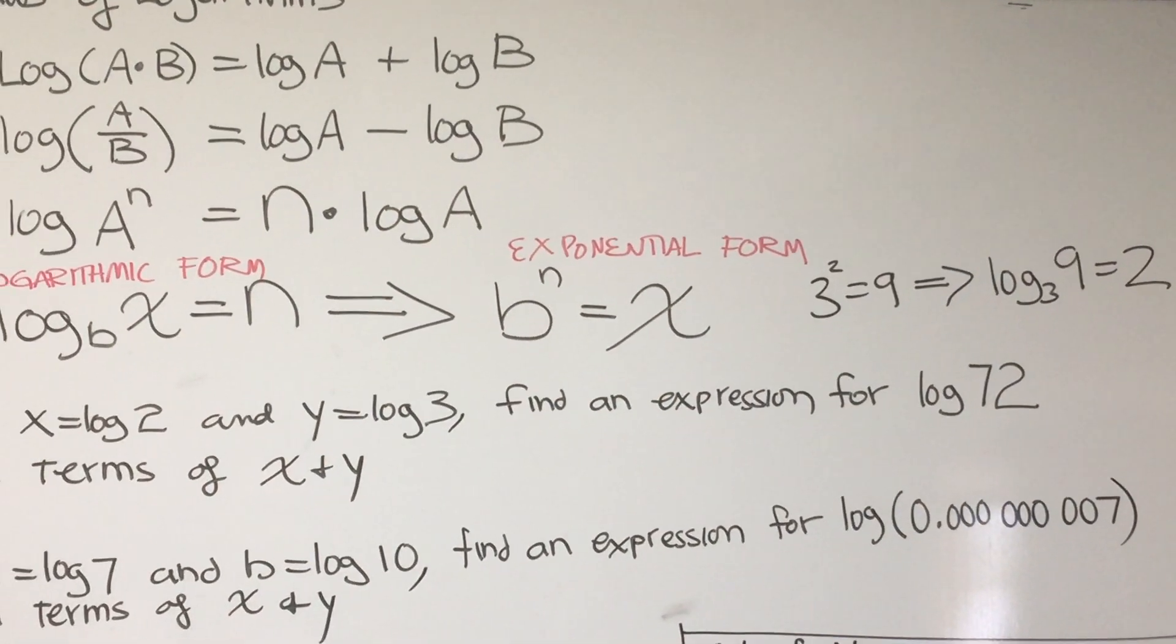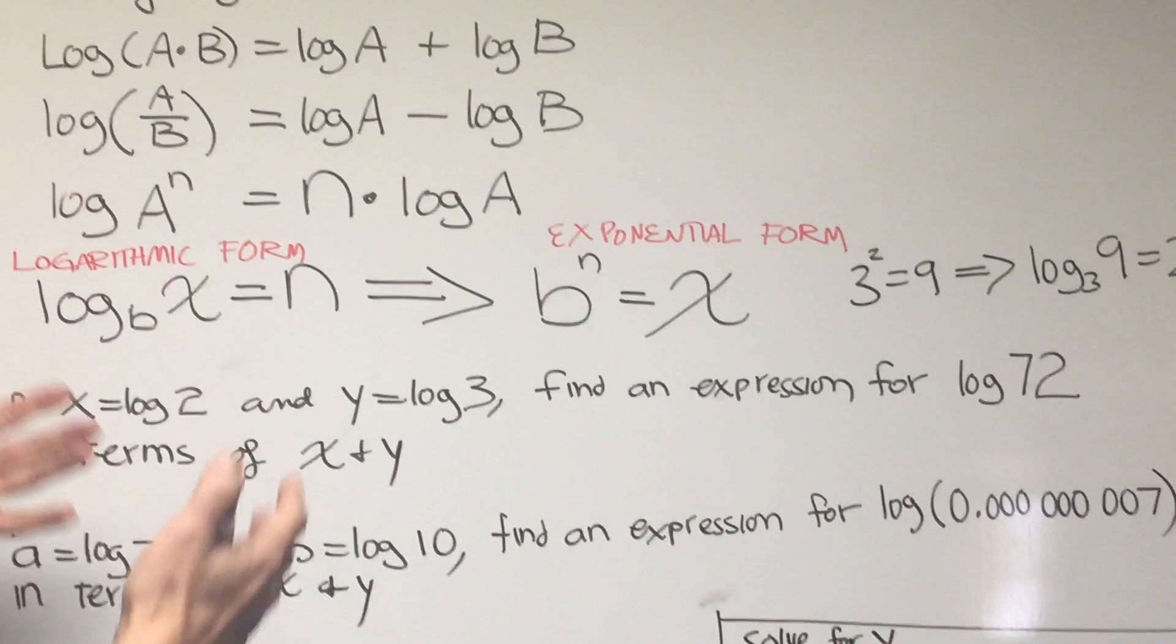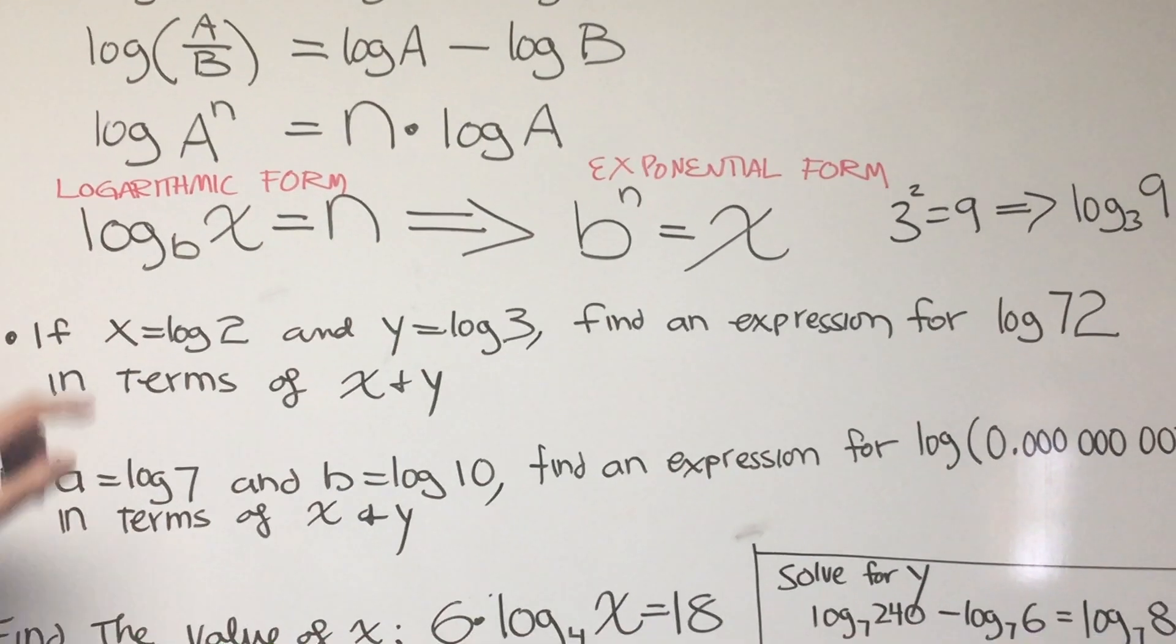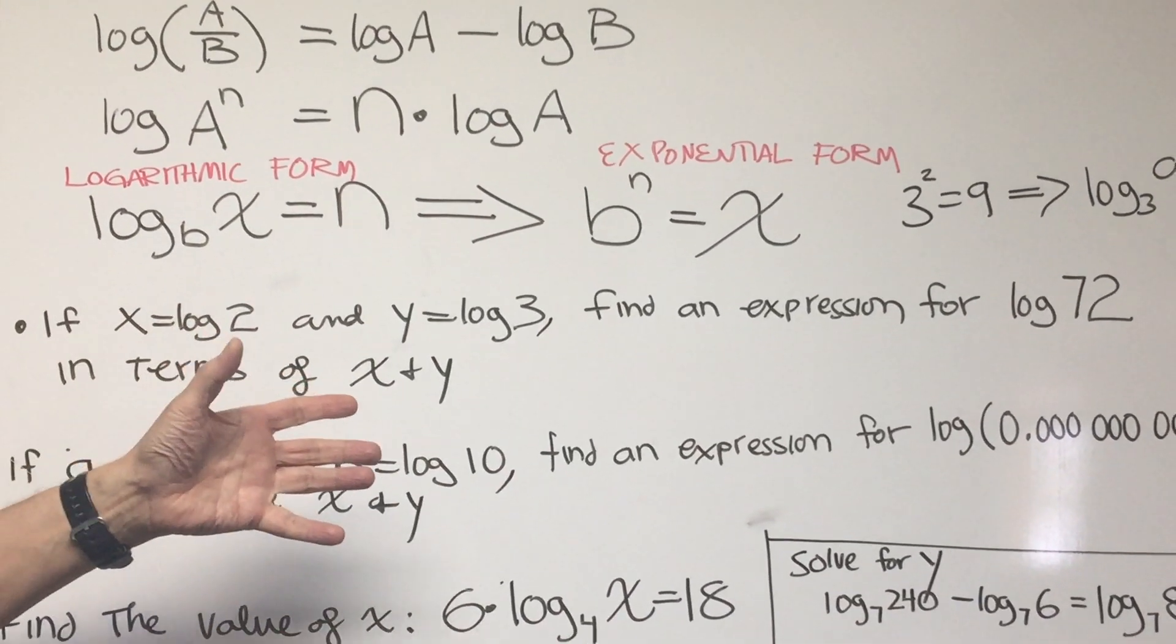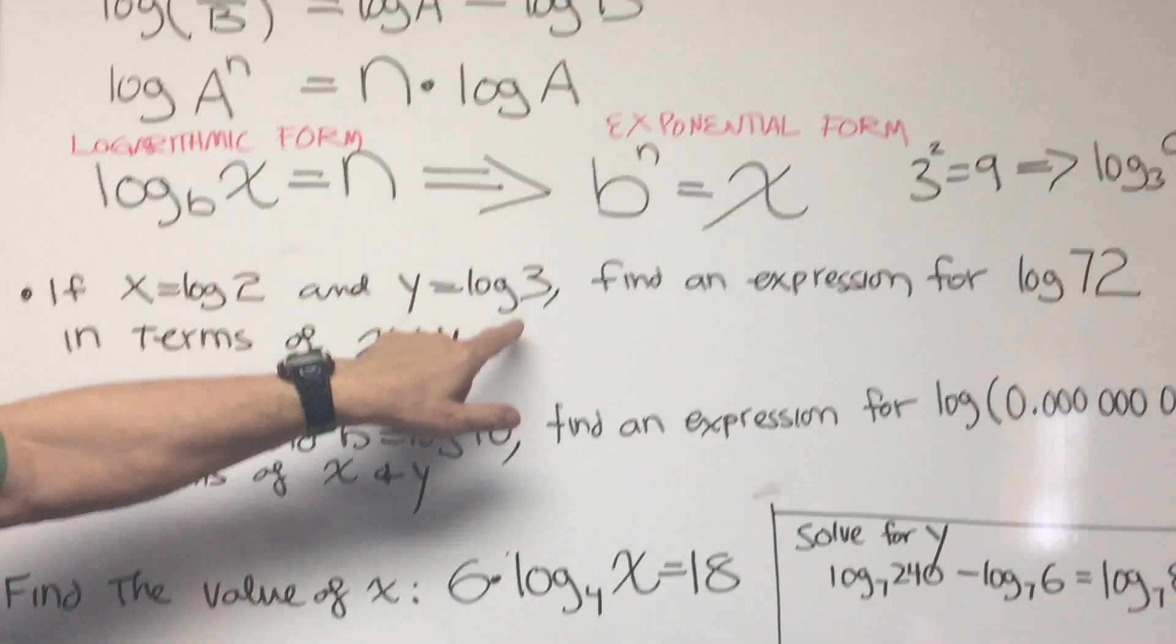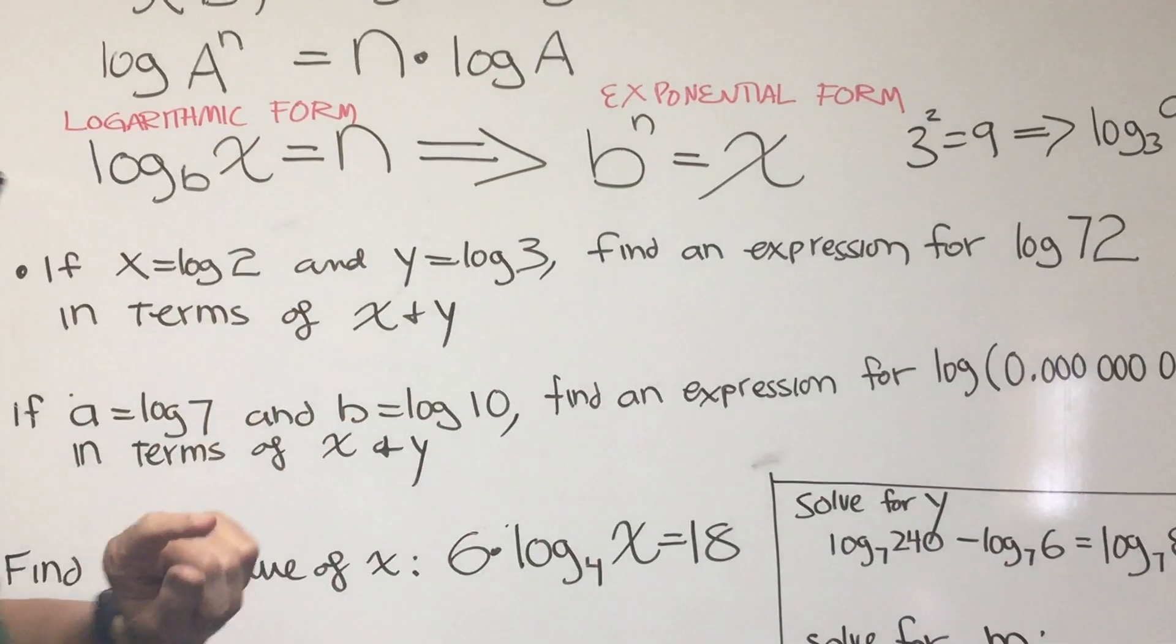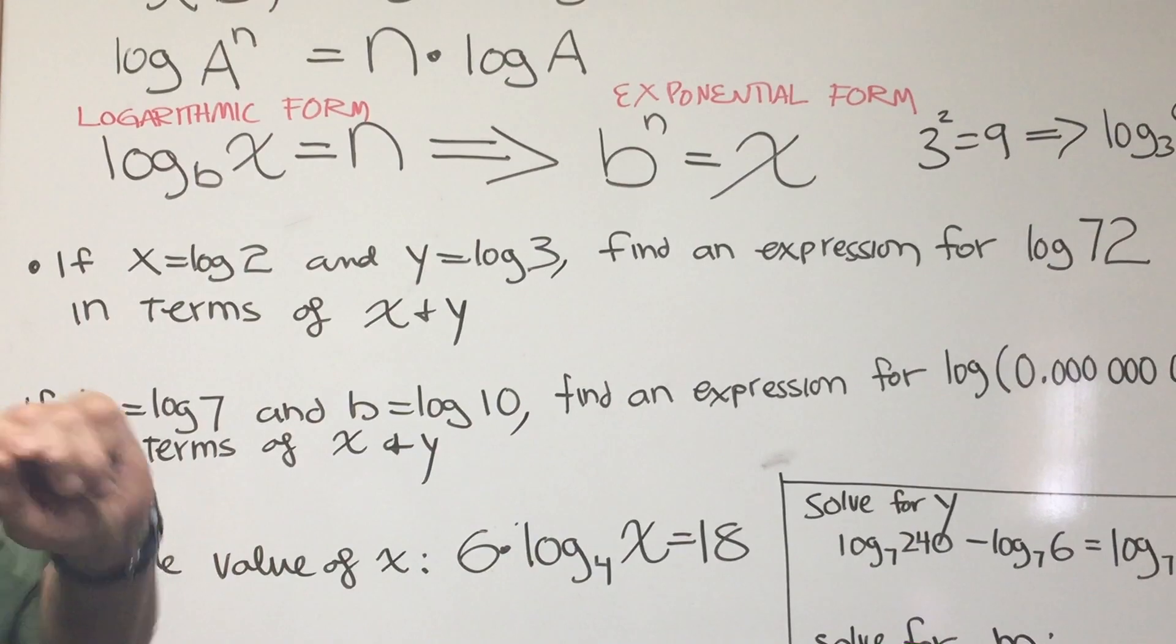Okay, so once we have these basic laws of logs internalized, let's go and do some problems. Here's a typical type of logarithmic problem you'll see on the DAT. If x equals log 2 and y equals log 3, find an expression for log of 72 in terms of x and y.